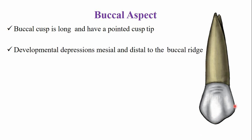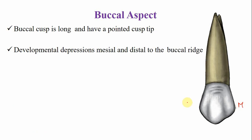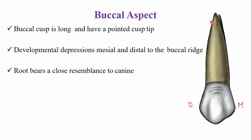Just like the canine, there are two developmental depressions on the buccal surface: the mesial buccal developmental depression and the distal developmental depression. In between these depressions is a raised portion called the buccal ridge, similar to the canine's labial ridge. The root also resembles the canine's root but is two to three millimeters shorter.